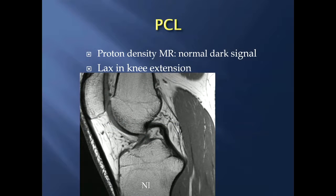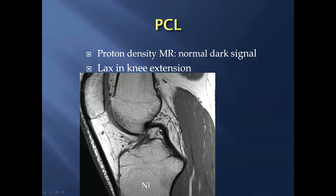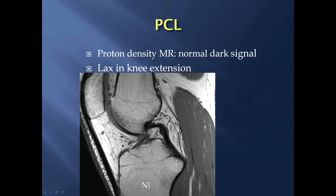Moving on to the posterior cruciate ligament, or PCL. On proton density MR images it's normally dark signal — notice how much darker it is than a typical ACL. Also, when the knee is in full extension at the time of MRI, it's a little bit lax, unlike the ACL, and you can't use tautness of the fibers to indicate a tear. Normally it's a little lax and has a somewhat bowed appearance.